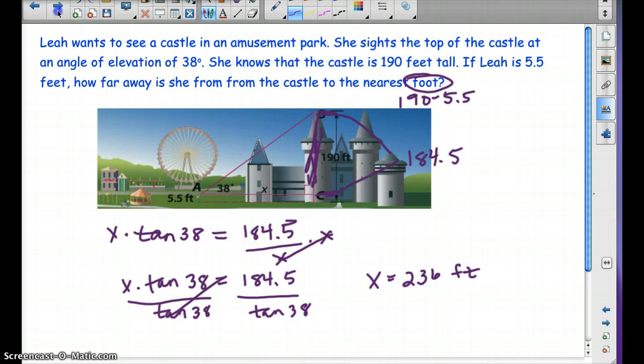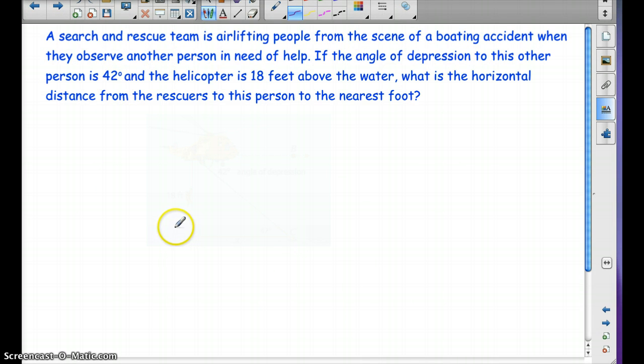A search and rescue team is airlifting people from the scene of a boating accident when they observe another person in need of help. If the angle of depression to the other person is 42 degrees, and the helicopter is 18 feet above the water, what is the horizontal distance from the rescuers to this person to the nearest foot? So, again, I want you to pause the video and go ahead and draw this, what you think it looks like.